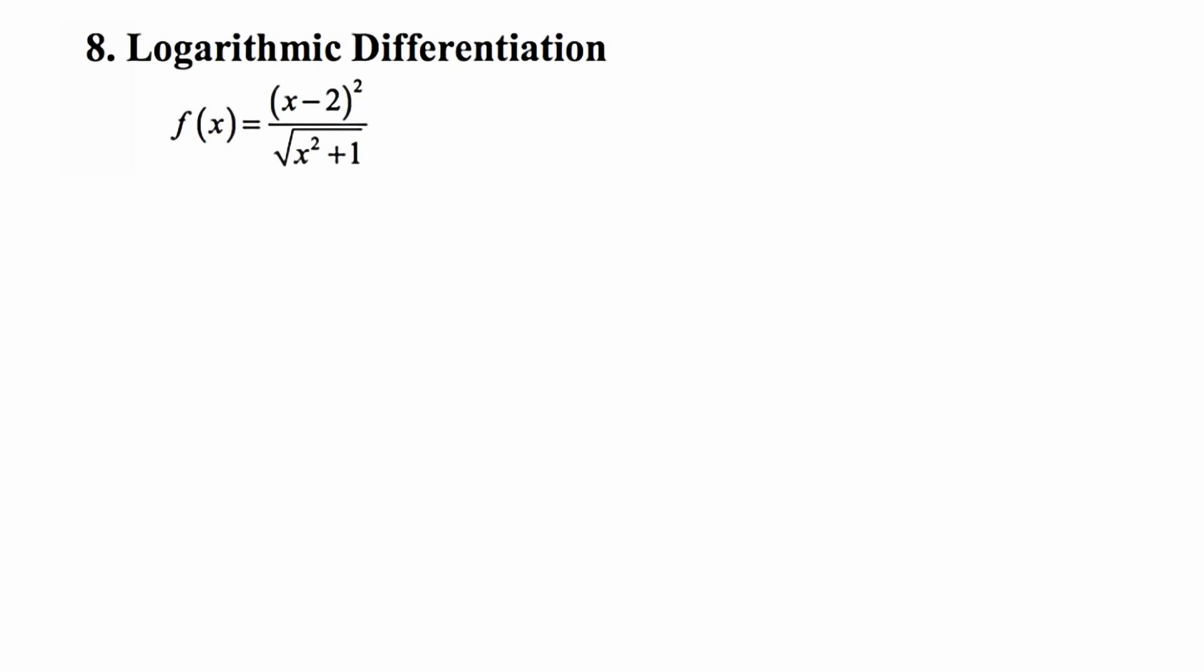So in problem number eight, we're given a function whose derivative could be found by using the quotient rule. But it would be a really messy problem algebraically because while it's a quotient, it also is going to have embedded chain rules involved. So it's possible to do it using older methods, but it would be really messy algebraically.